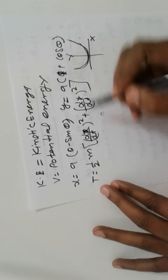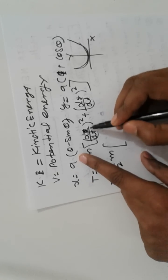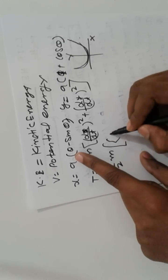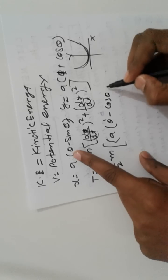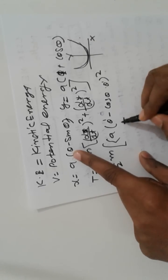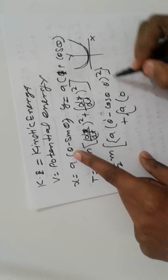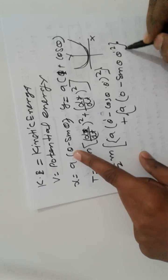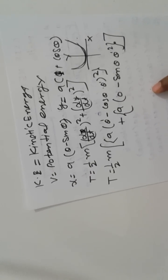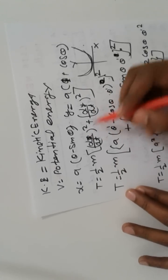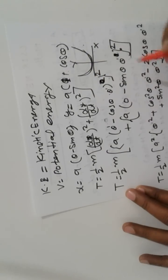So find out T equals one-half m. With respect to t, dx/dt is a times theta dot minus cos theta times theta dot, whole squared. Plus dy/dt is a times 0 minus sin theta times theta dot, whole squared.